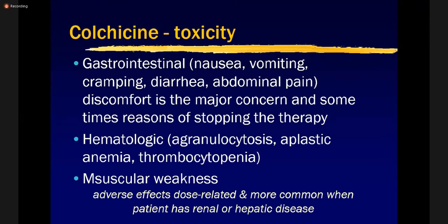Colchicine toxicity: the major concern is gastrointestinal discomfort — nausea, vomiting, abdominal cramping, diarrhea, and abdominal pain. This is sometimes the reason for stopping therapy. With prolonged use, agranulocytosis, aplastic anemia, and thrombocytopenia can occur. Muscular weakness is also an adverse effect. These adverse effects are dose-related and more common when the patient has renal or hepatic disease.